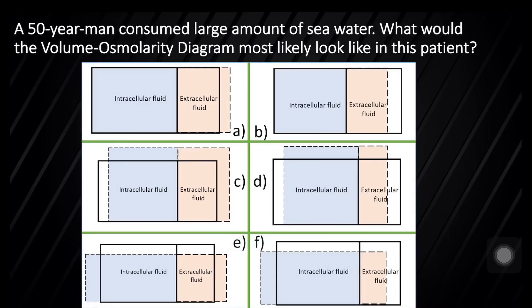Question number 5: a 50-year-old man consumed large amount of sea water. What would be the volume-osmolarity diagram in this case? Sea water contains more solutes than the body fluid. Drinking such hyperosmolar solution will increase the volume and the osmolarity of the ECF. A hyperosmolar volume expansion in the ECF.